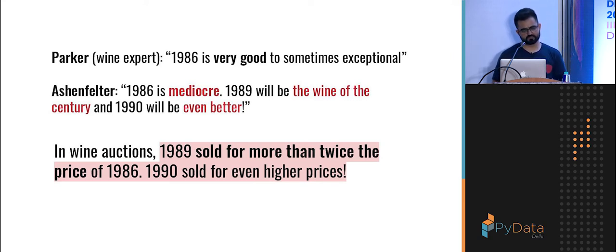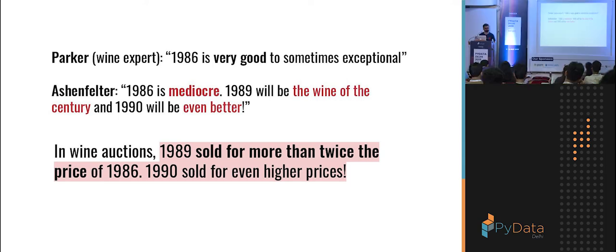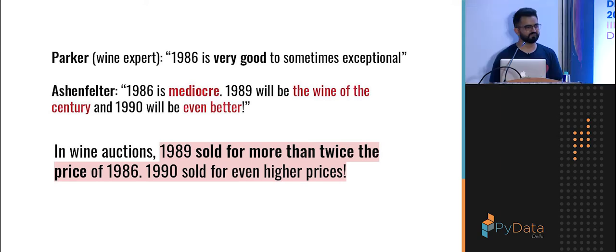So Parker, the wine expert, said that 1986 wine is going to be very good to sometimes exceptional. Fair enough prediction, he understands wine well. So Aschenfelter had to counter it. And he said that's mediocre, 1989 will be the wine of the century and 1990 will be even better. And of course that happened. And it blew a lot of people's minds and I felt, this is kind of interesting. I'm a wine enthusiast and of course I love data science.